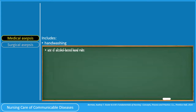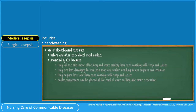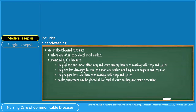Alcohol-based hand rubs are used before and after each direct client contact. They are promoted by the CDC because: (1) they kill bacteria more effectively and more quickly than hand washing with soap and water, (2) they are less damaging to skin, resulting in less dryness and irritation, (3) they require less time than hand washing with soap and water, and (4) bottles or dispensers can be placed at the point of care so they are more accessible.